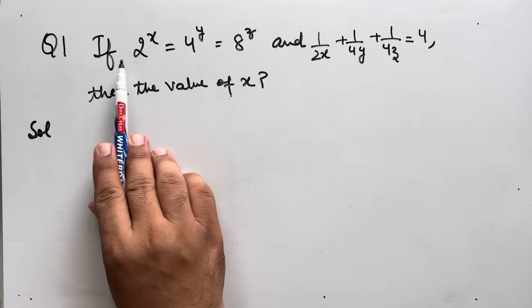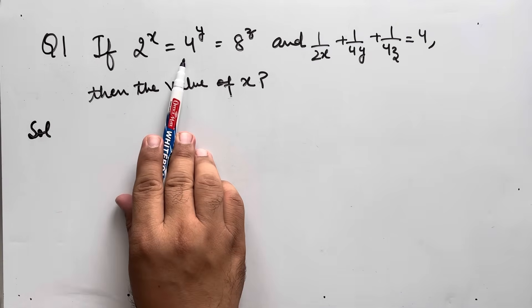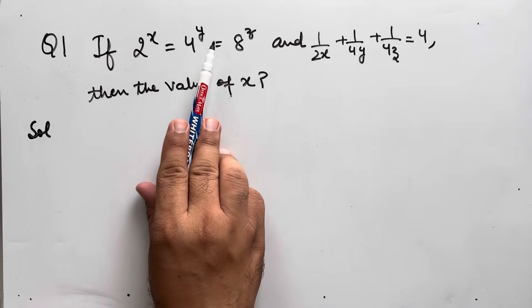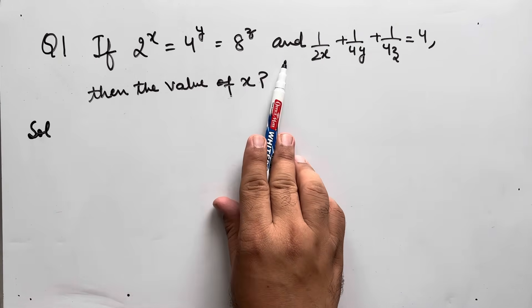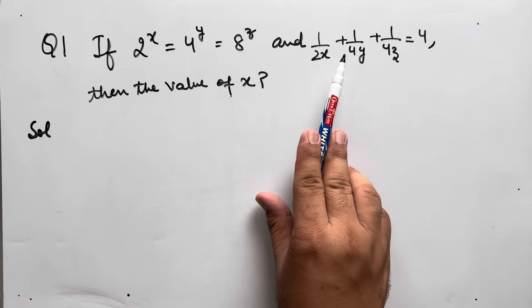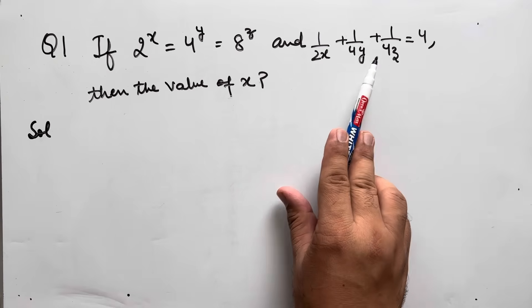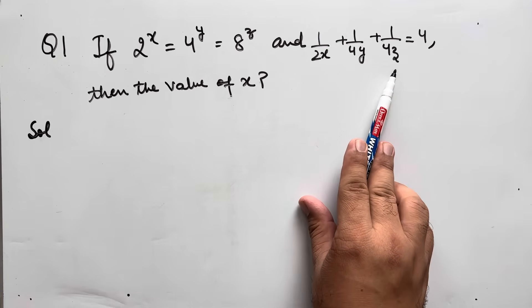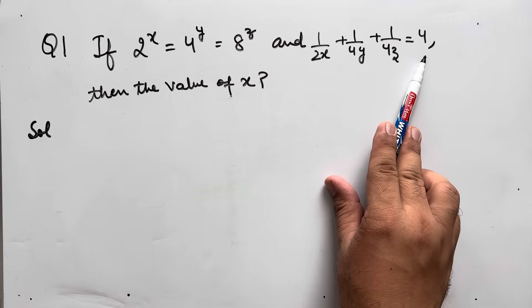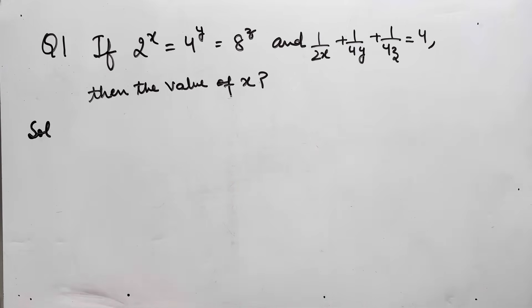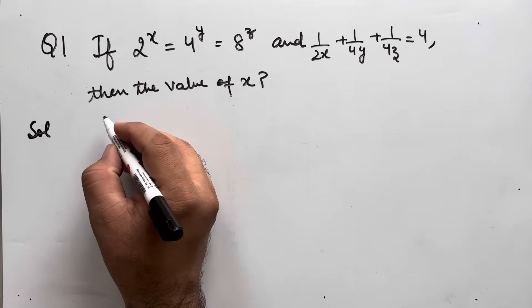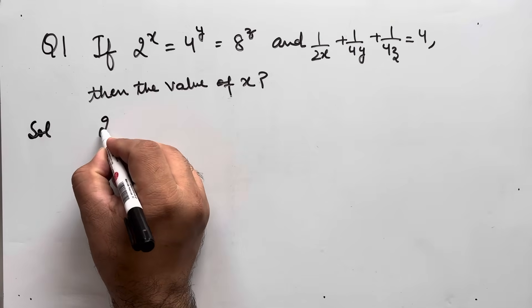Question number 1: if 2^x = 4^y = 8^z and 1/(2x) + 1/(4y) + 1/(4z) = 4, then we have to find the value of x. Now, 2^x, 4^y can be written as (2^2)^y, and 8^z can be written as (2^3)^z.